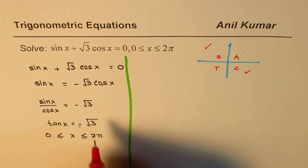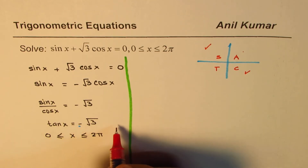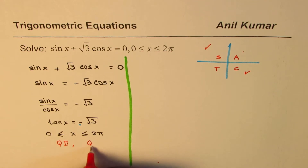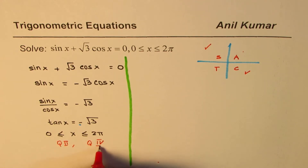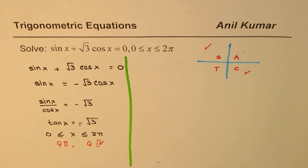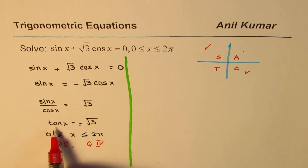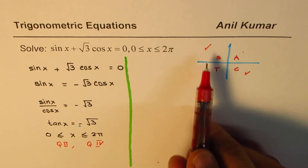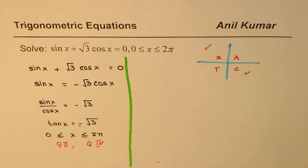So we are looking for solutions in quadrant 2 and in quadrant 4, for which tan x has magnitude square root 3. It will be negative when we place it in these two quadrants.